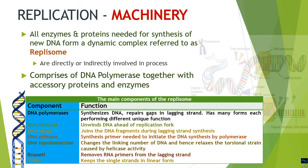Topoisomerases change the linking number and relax the torsional strain at the replication fork caused by unwinding of the DNA. RNase H removes the RNA primers synthesized during initiation of replication. Finally, single-strand binding proteins keep the single strand in a linear form during replication. All of these are constituents of the replisome.